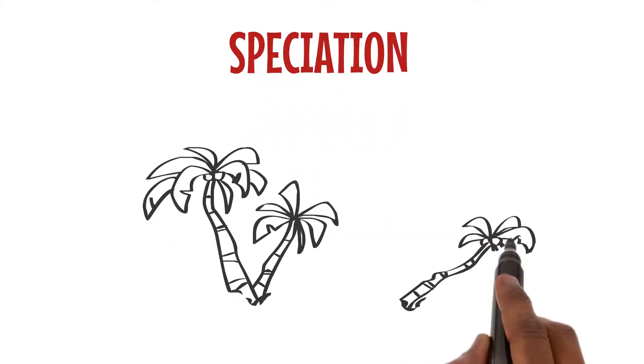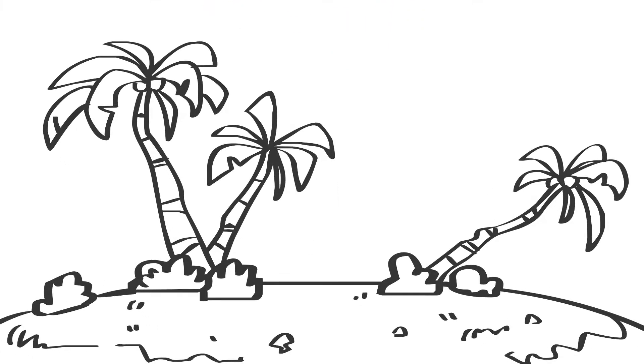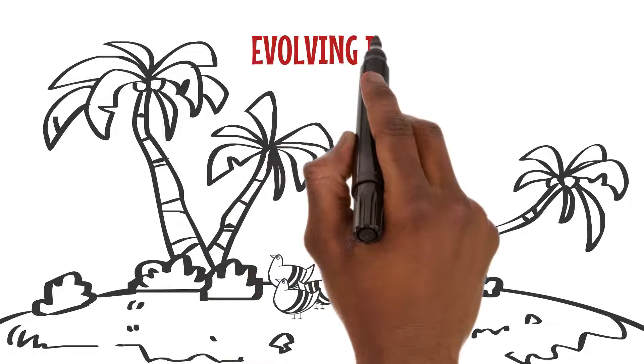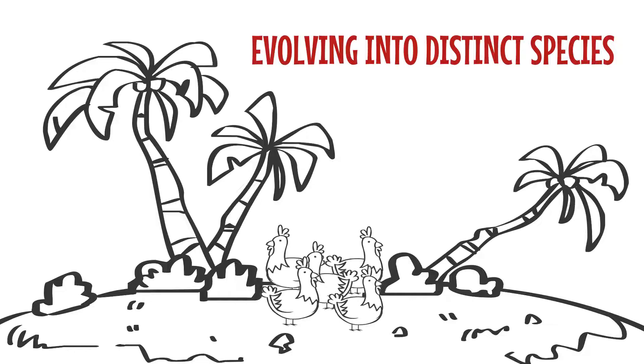Over time, new species can emerge through speciation. Imagine a group of birds on an isolated island evolving into distinct species due to unique traits. This process brings biodiversity to life.